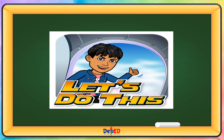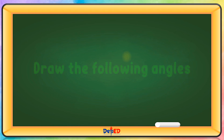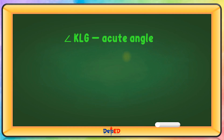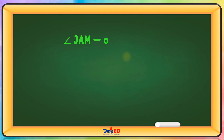Let's do this! Draw the following angles. Angle KLG is an acute angle. Angle RZL is a right angle. Angle J-A-M is an obtuse angle.